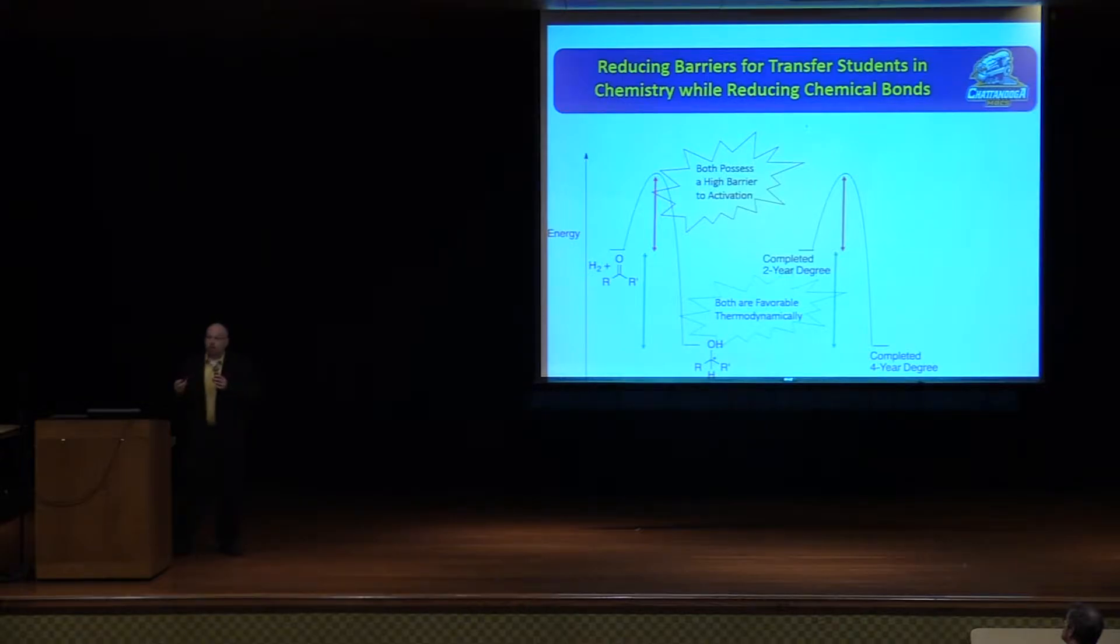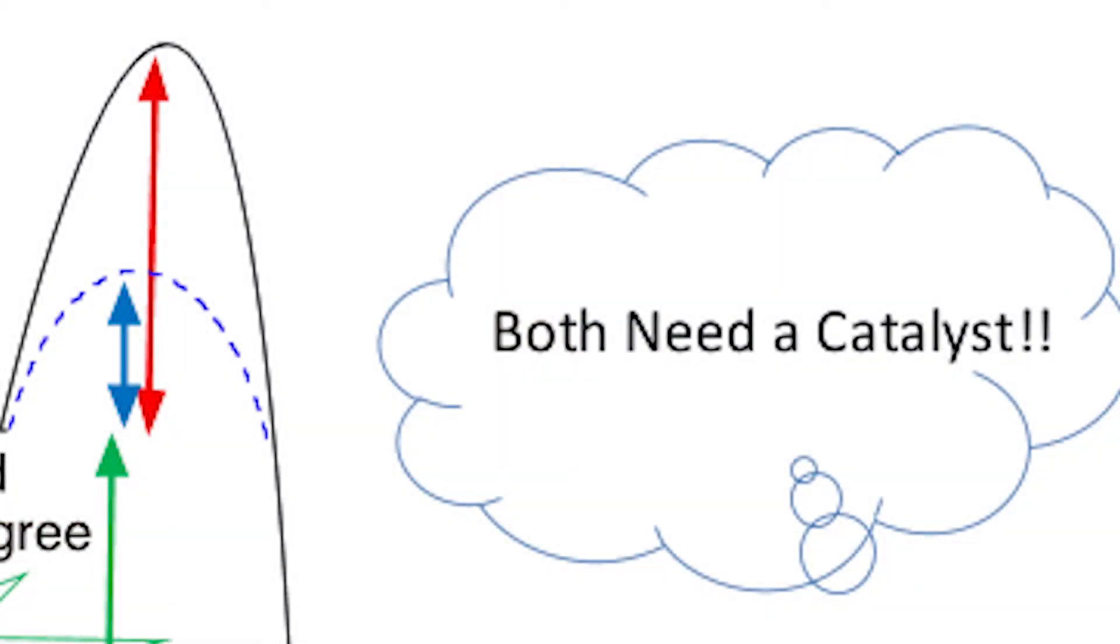On the right-hand side, that involves a student coming in not as a freshman but as a junior now, and dealing with students that have already formed study groups. They know their professors, they know the UTC culture, they know where everything is. So there is something that has to be overcome here. So both processes need a catalyst.